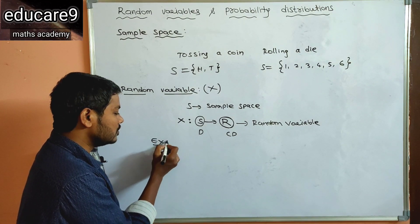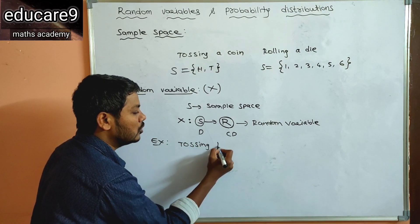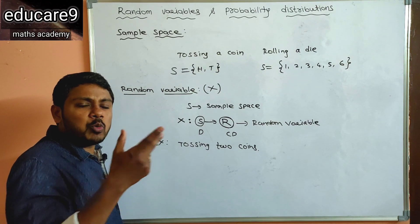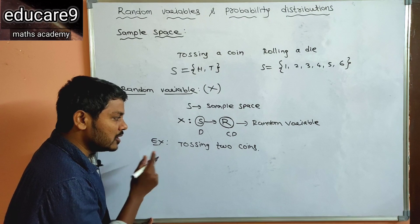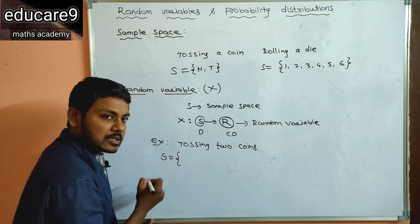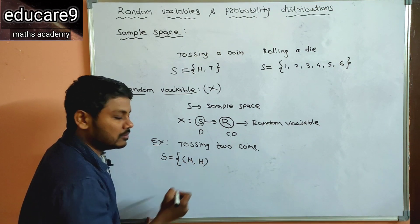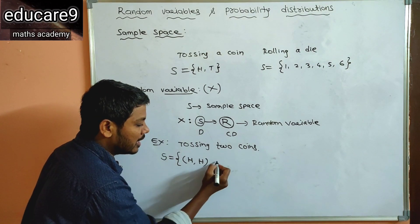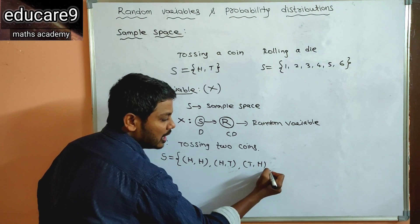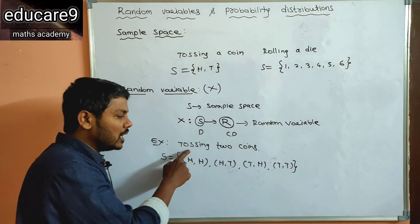For example, consider tossing two coins. If you toss two coins, the possible outcomes are: both heads (H, H), first head and second tail (H, T), first tail and second head (T, H), or both tails (T, T). So the sample space S equals {HH, HT, TH, TT}. These are all the possible outcomes when tossing two coins.